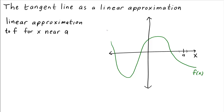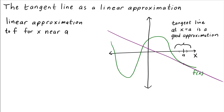In that zoomed-in view, f will be very close to its tangent line. The graph of the tangent line might look something like this. Clearly the tangent line isn't a good approximation to f far away from a, but right near a it does a good job — say in this region right here. In this region, the tangent line at x equals a is a good approximation to f.